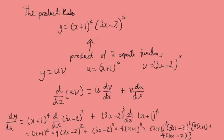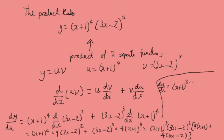We can expand the brackets. The final answer for that would be: dy by dx equals (x plus 1) cubed times (3x minus 2) squared times (21x plus 1).